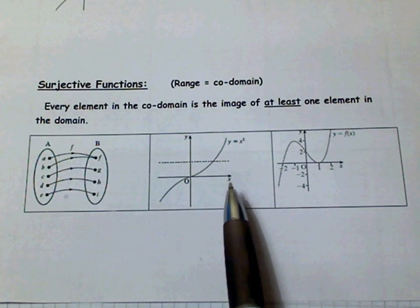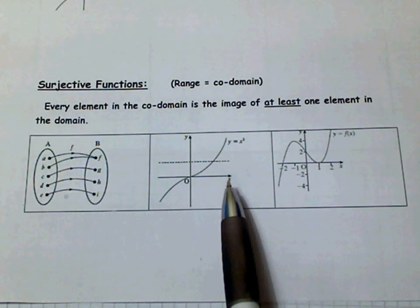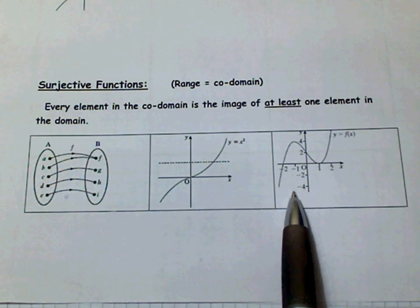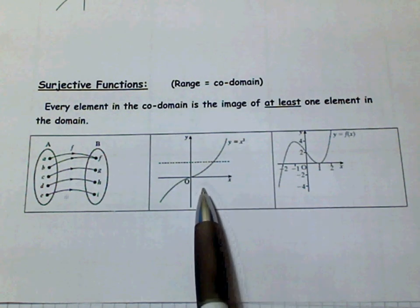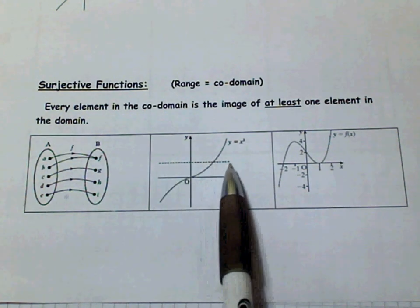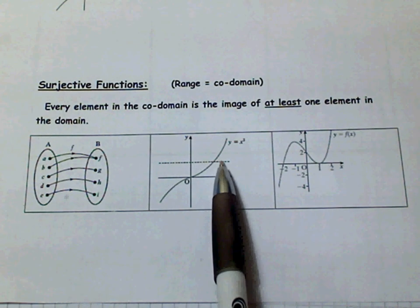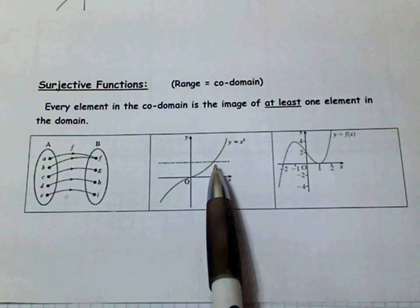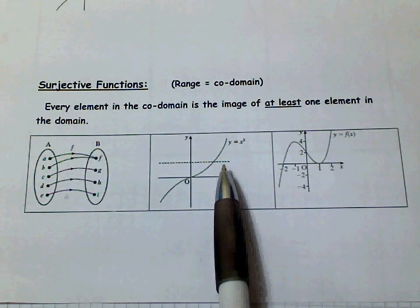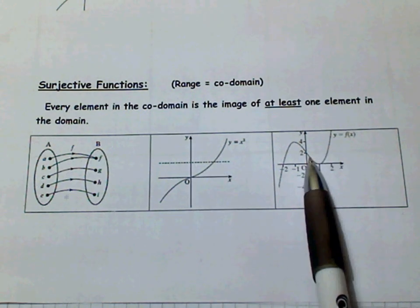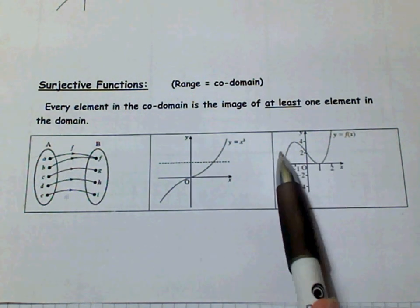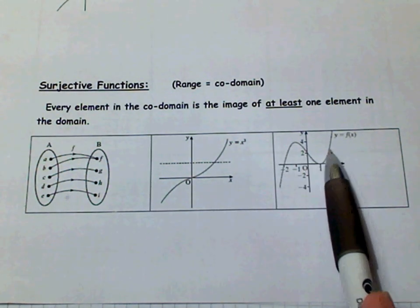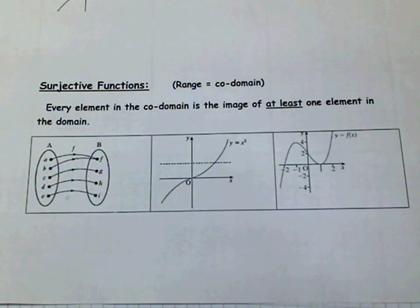For a surjective function, you use the horizontal line test again. Both of these graphs are surjective functions. This is a surjective function because the horizontal line cuts the graph at least once. For an injective function it could only cut once, but for surjective it cuts at least once. This is also a surjective function because the horizontal line cuts it at least once — you can see it cuts once, twice, three times in this particular function.